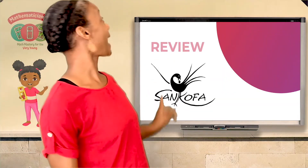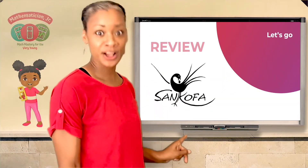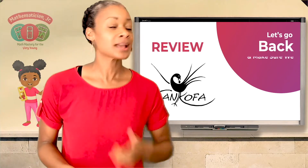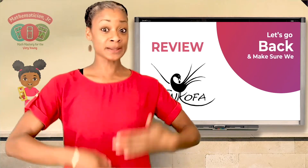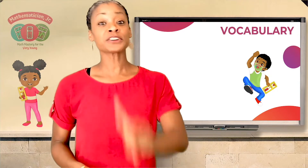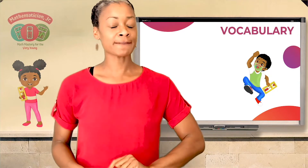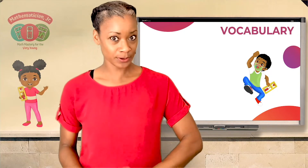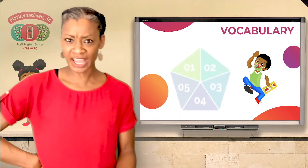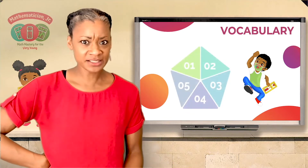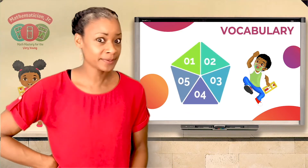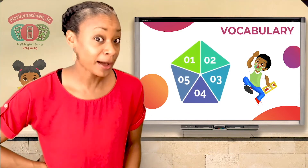As usual, we have to go back — Sankofa — to make sure that we have the skills we're going to need to build on what we learn today. First, we had a vocabulary word, and that vocabulary word was a shape. That shape was special because it had a certain number of sides.